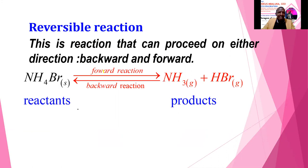A reversible chemical change is a reaction that can proceed in either direction. We have ammonium bromide, which undergoes thermal dissociation — when heated, it dissociates into ammonia and hydrogen bromide. If you cool the ammonia and hydrogen bromide, you get back the original ammonium bromide. This is a reversible chemical change because it can proceed in either the forward or the backward direction.